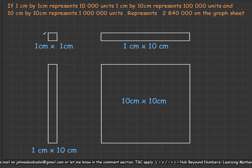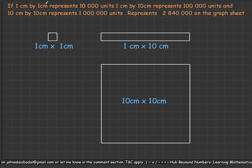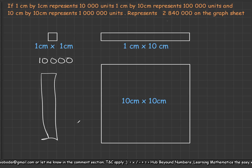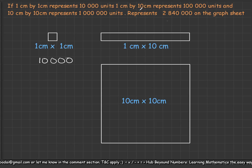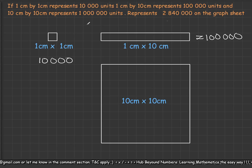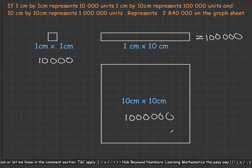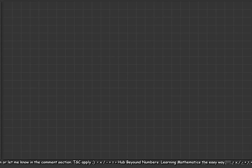For explanation purposes, I've copied the scale here. From the first statement, if we see this small square, it represents ten thousand. If we see this one-by-ten centimeter rectangle — which can be drawn vertically — it represents one hundred thousand. And according to the scale, this bigger ten-by-ten square represents one million units.